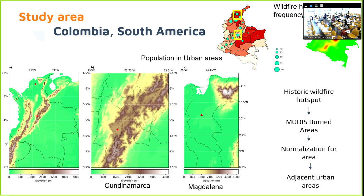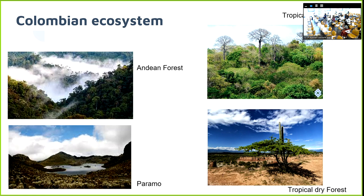You can see that Cundinamarca is the region with higher elevation above sea level, while Magdalena is located near the sea. The ecosystems found in Colombia — in Cundinamarca — include Andean forest and Páramo. As you can see, the vegetation is very different.